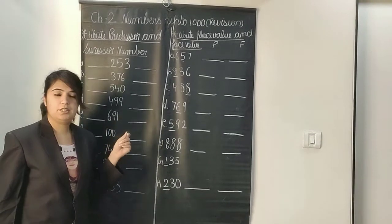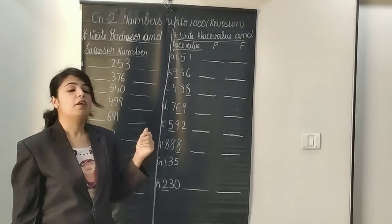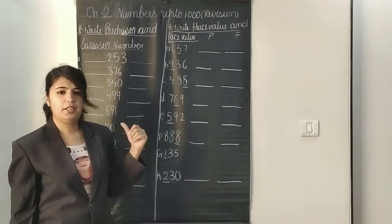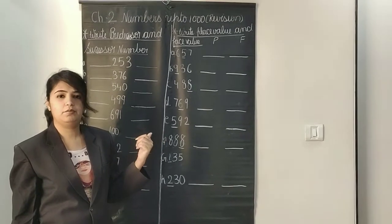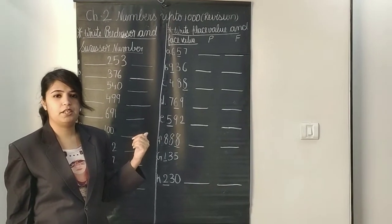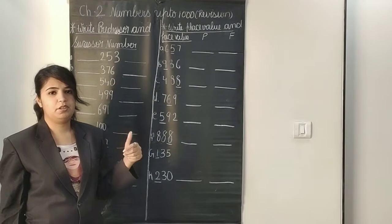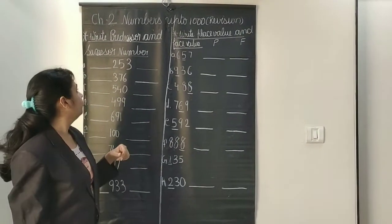Predecessor and successor numbers means just the before and after number. You have learned in the first standard what is the before number and what is the after number — that is what we are going to learn.